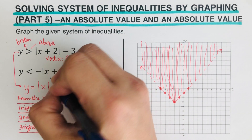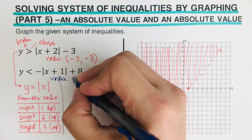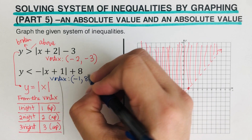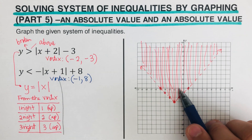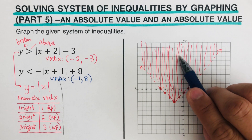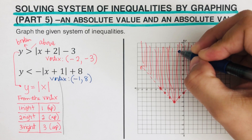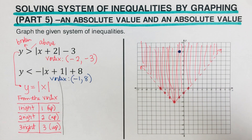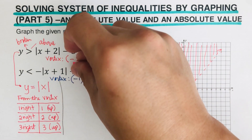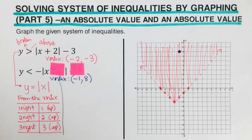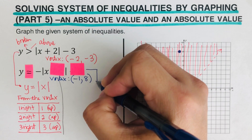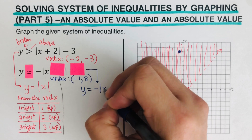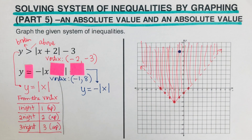Now we move to the second inequality. Again, we determine the vertex — remember, switch and keep. So that would be negative one and eight. The vertex sits at negative one, eight. Now we determine where the rest of the dots go. We cover the k, cover the h, and change the inequality to equal. The equation we're going to use is y equals the negative absolute value of x. From here we're ready to create the table.